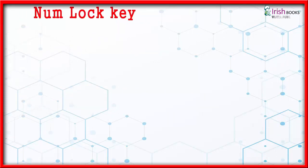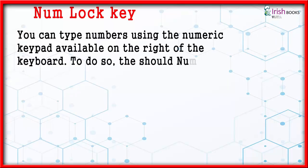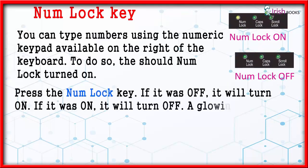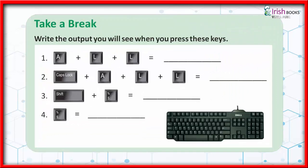Num lock key: you can type numbers using the numeric keypad available on the right of the keyboard. To do so, the num lock should be turned on. Press the num lock key — if it was off, it will turn on; if it was on, it will turn off. A glowing light above the num lock label indicates that it is on.